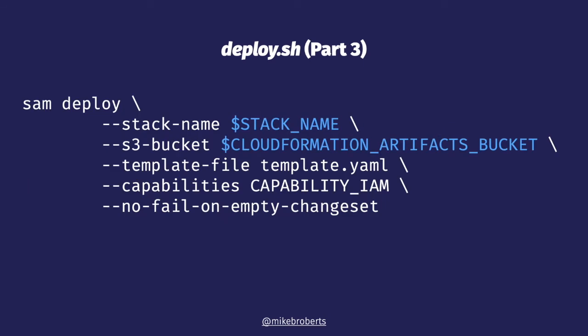Now that we have our stack name and a place to store deployment artifacts, we can deploy our stack. We use sam deploy again, but this time we specify a bunch of parameters so that it can run in an automated fashion and not use the local SAM config file. There's a lot going on here, but because it's in a script, we don't need to type this manually every time we want to deploy. Next, I'm going to show you this script actually running from my local laptop. I'll admit I cheated very slightly in that I cut out some of the pauses, so the actual deployment took about a minute rather than just a few seconds that you're going to see here.